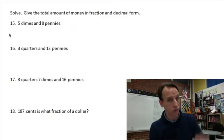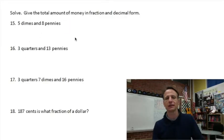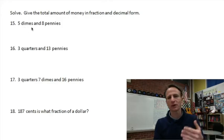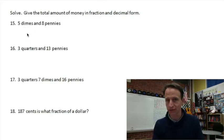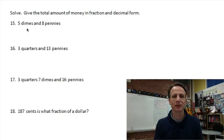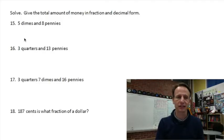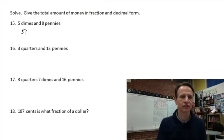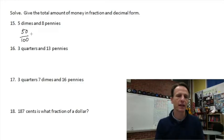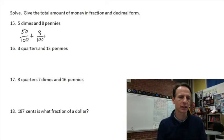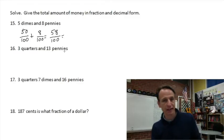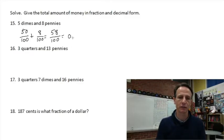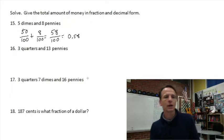Now we solve problems expressing the total amount in both fraction and decimal form. Start with each component as hundredths: five dimes is 50 cents = 50/100. Eight pennies is eight cents = 8/100. Put them together: 58 cents = 58/100. In decimal form, that's 0.58.